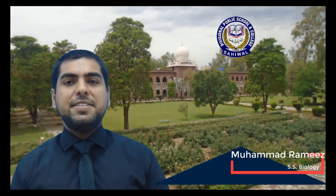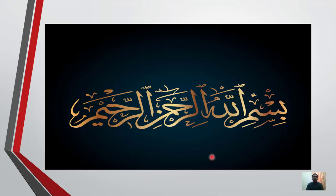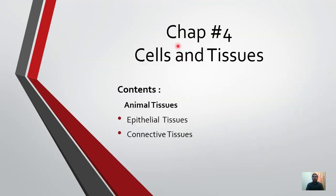Assalamu alaikum dear students, myself Muhammad Raviz Ajmar, subject specialist biology. Bismillahirrahmanirrahim. Chapter number 4, Cells and Tissues. The contents of today's lecture is Animal Tissues. We discuss two types of animal tissues: first of all epithelial tissues and second connective tissues.